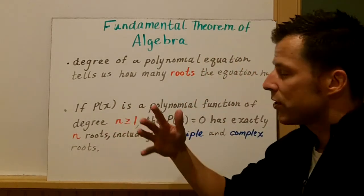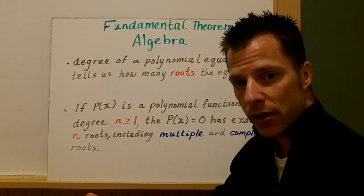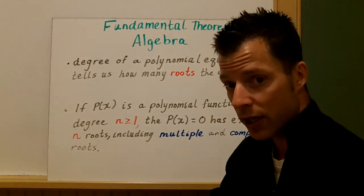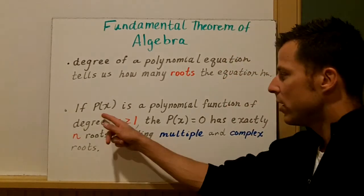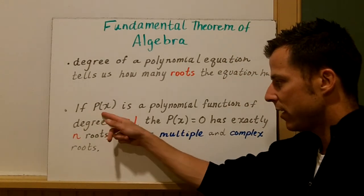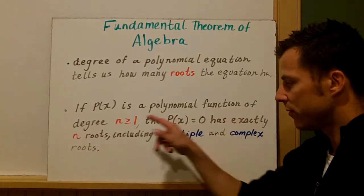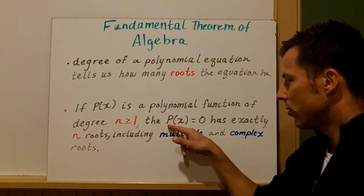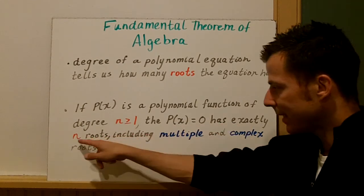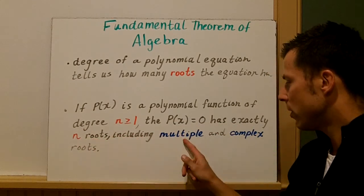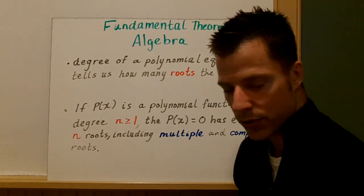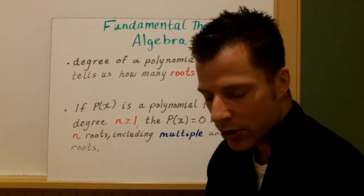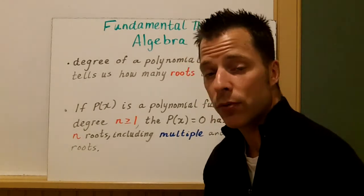So if it's a cubic, there's going to be three zeros. If there's a quartic, there's going to be four. If it's quadratic, it could be two. The definition is: if P(x) is a polynomial function of degree greater than or equal to one, the polynomial set equal to zero has exactly n roots, including multiple and complex roots. So the largest degree is going to tell us how many roots there are.